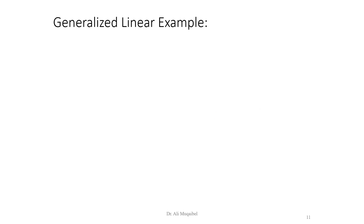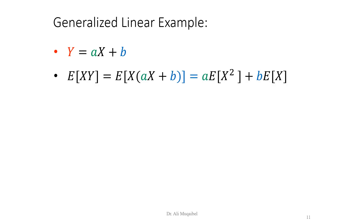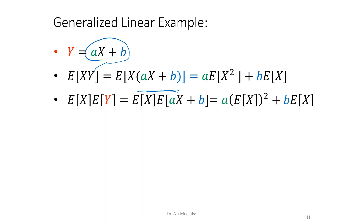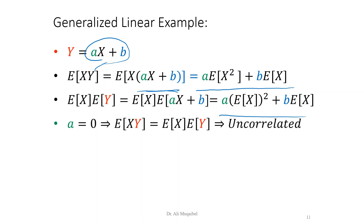Now let's do a generalized linear example. Let Y = aX + b, using general coefficients rather than specific numbers. The correlation E[XY] = E[X(aX+b)] = a*E[X²] + b*E[X]. Comparing this with E[X]*E[Y], these two expressions are generally not the same. If a = 0, the two expressions become equal and we can guarantee X and Y are uncorrelated — meaning if Y is just a constant, they are uncorrelated.